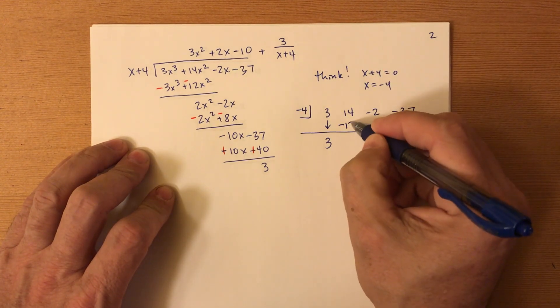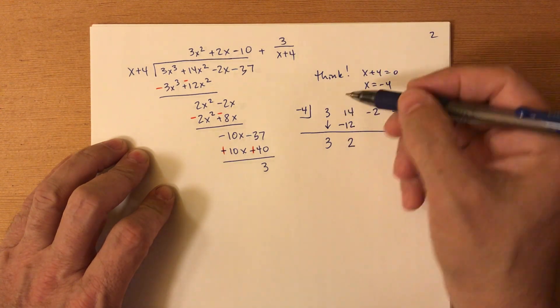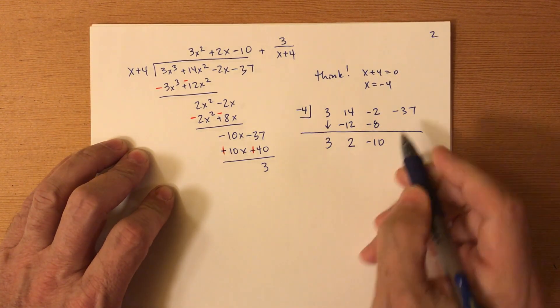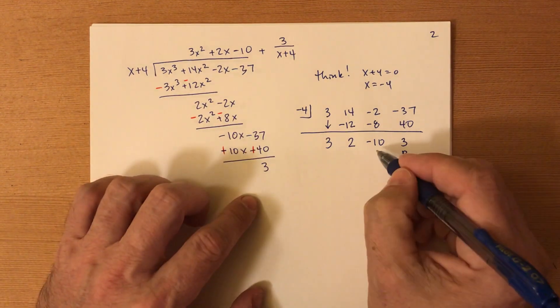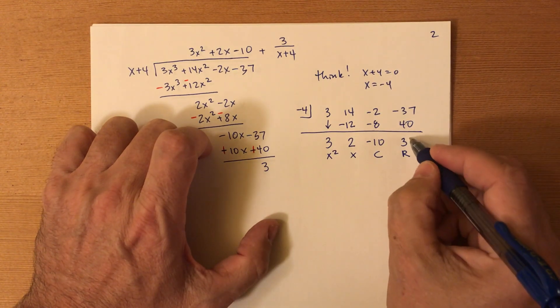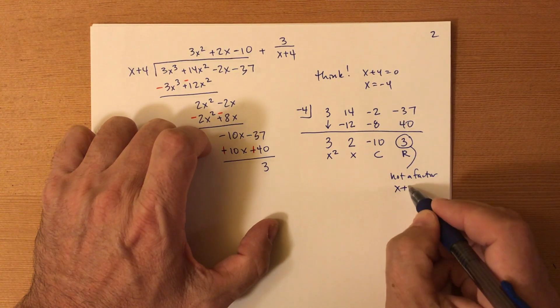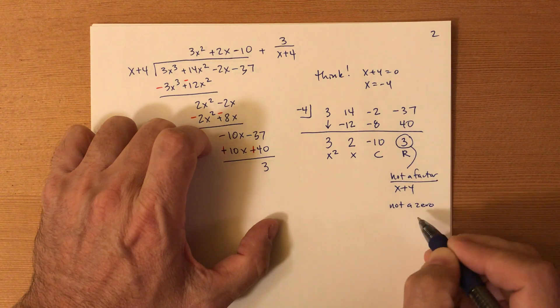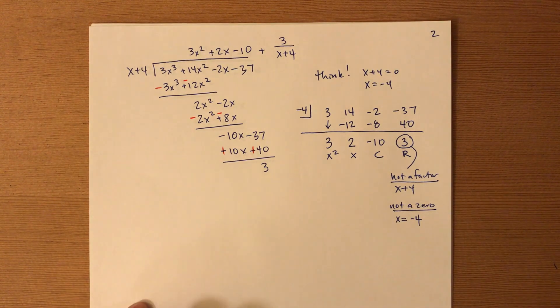Negative four times three, negative 12. Always add two. Negative eight times, I'm sorry, I said the answer negative four times two, negative eight. So that's negative 10. And then negative four times negative 10 is 40. And so we add we get three. Check that out. That's the remainder. This is the constant term. This is the x term. And this is the x squared term. Okay, since this was not a zero, not a factor. What wasn't a factor? x plus four was not a factor. And that also means not a zero. x equals negative four is not a zero. Okay, those will all come back. We're just planting seeds in your head.